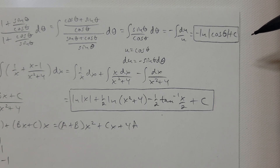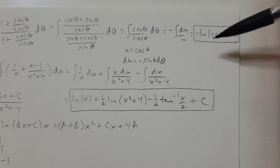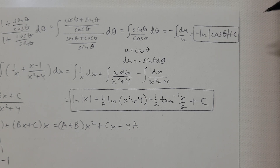So the answer is negative ln of the absolute value of cosine theta plus C. Or, you could bring up the negative as a power, giving ln of cosine theta to the negative 1, which is ln of the absolute value of 1 over cosine theta. Since 1 over cosine theta is secant theta by definition, another form of the answer is ln of the absolute value of secant theta plus C.